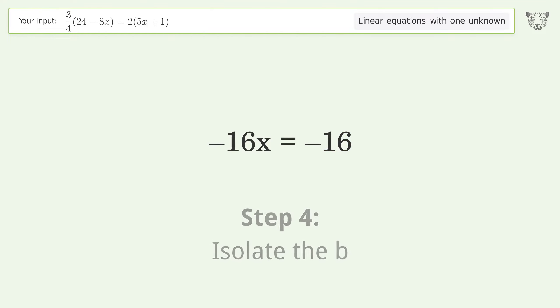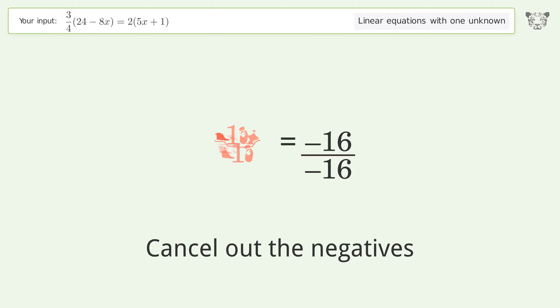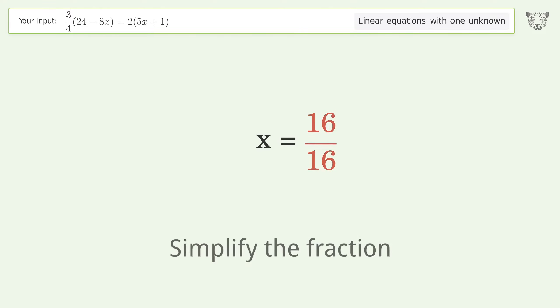Isolate the variable. Divide both sides by negative 16. Cancel out the negatives and simplify the fraction.